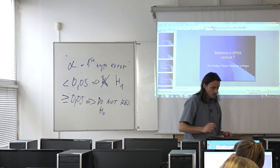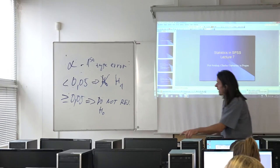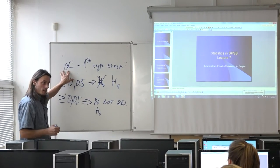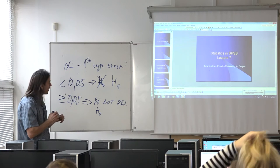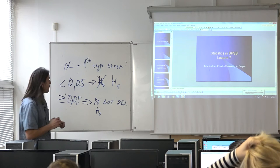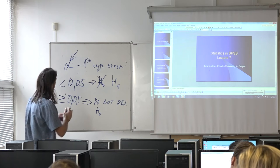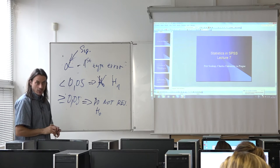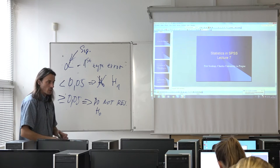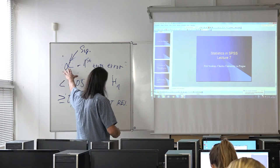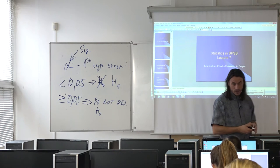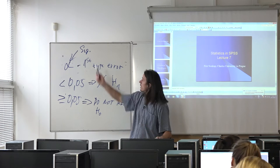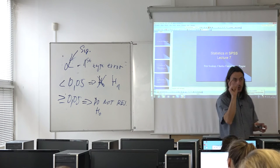We only try to reject the null hypothesis and prove the alternative. One last important comment: this alpha is named in many different ways in statistical software. SPSS uses the shorthand 'Sig,' which stands for significance, or the full expression 'statistical significance.' So the probability of first type error — the probability of incorrectly rejecting the null hypothesis — is called statistical significance, and SPSS uses the shorthand 'Sig.'